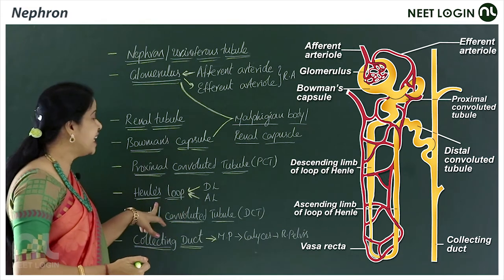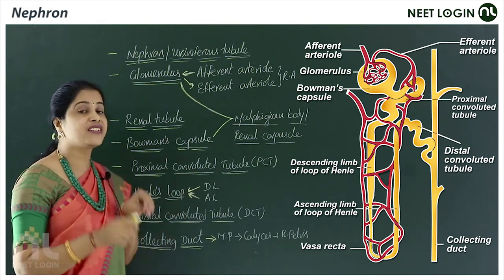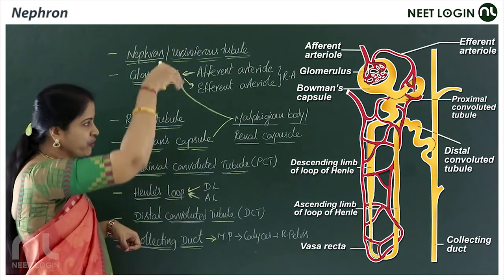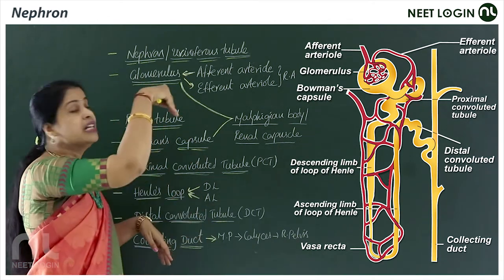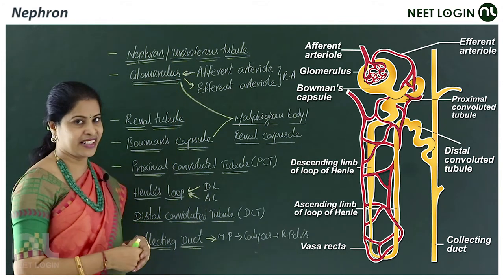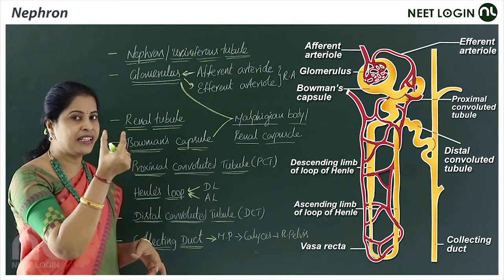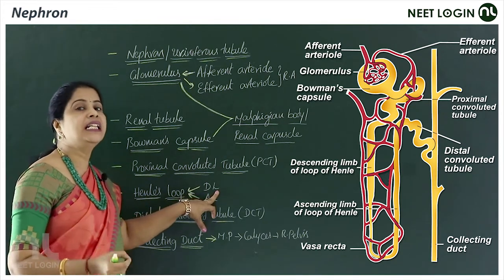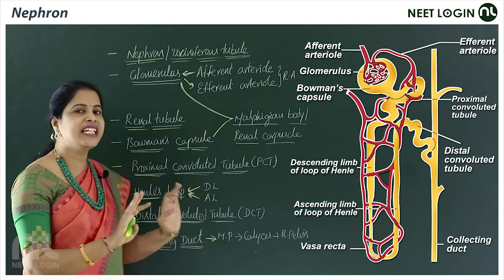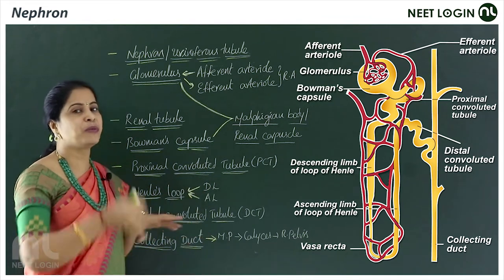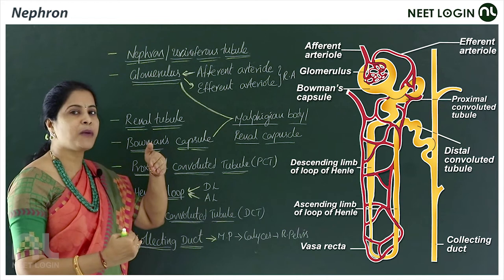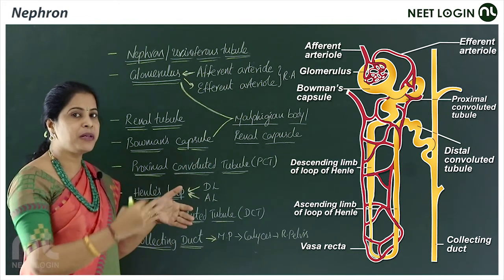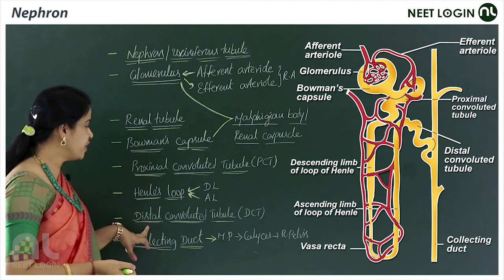The hairpin-turn loop is called Henle's loop, a characteristic feature of mammalian nephrons. It has two limbs: the descending limb (going downward) and the ascending limb (going upward). The descending limb and the thin segment of the ascending limb are lined with simple squamous epithelium, while the thick segment of the ascending limb is lined with simple cuboidal epithelium.